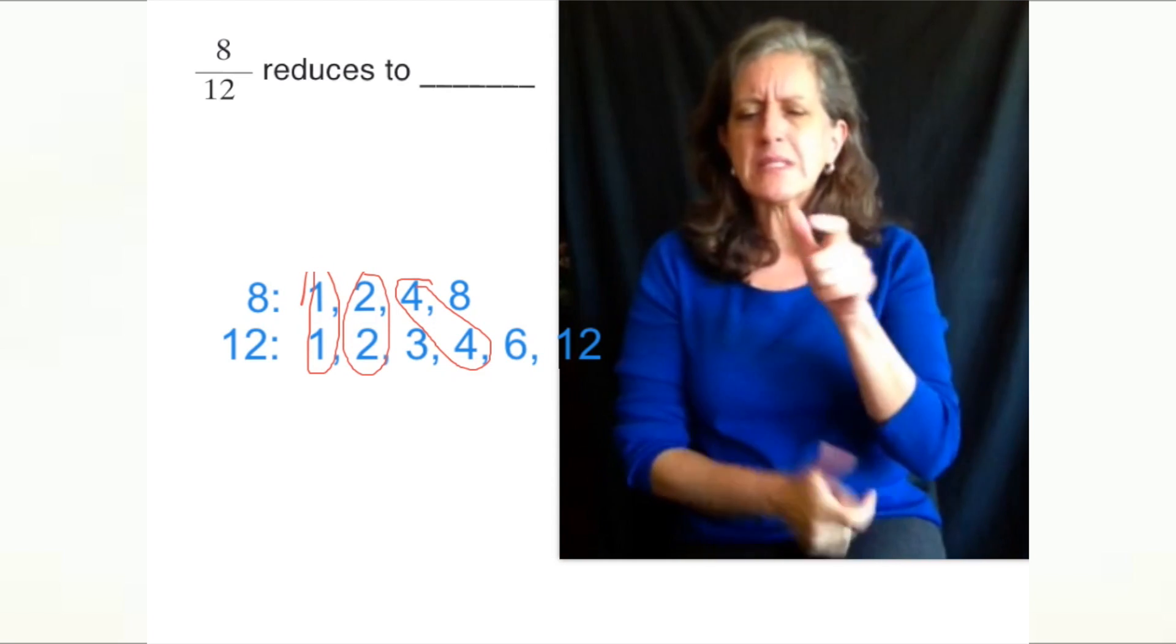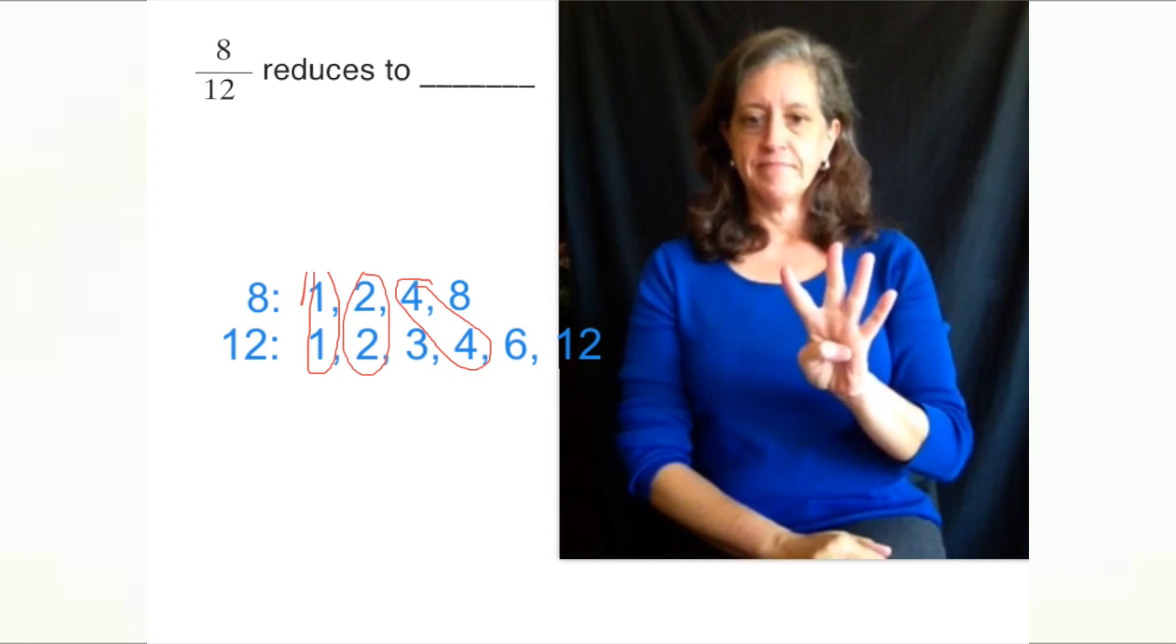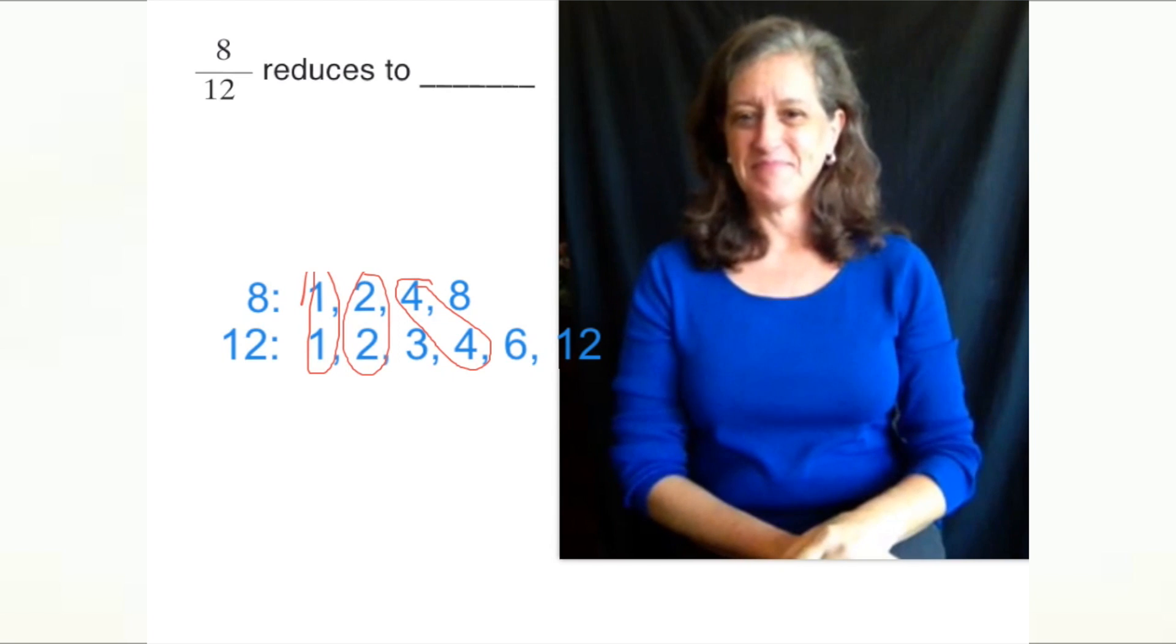Now we need to pick which of those numbers is the largest. Four, right? That means that 4 is the GCF, the greatest common factor.